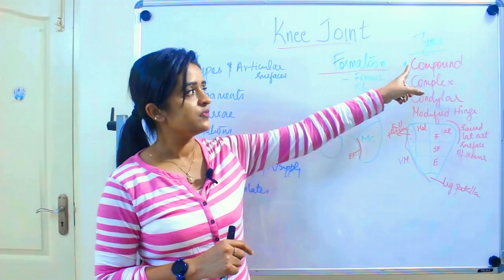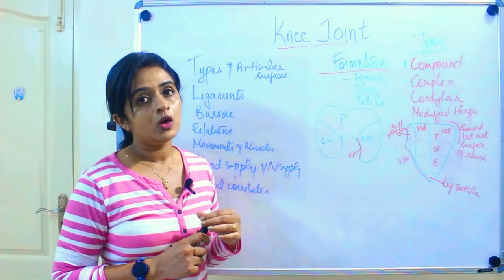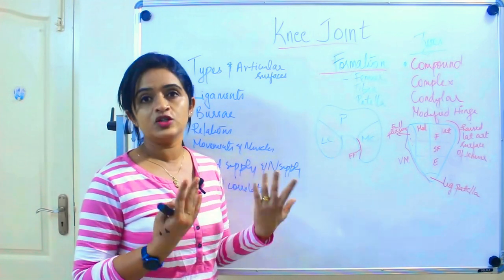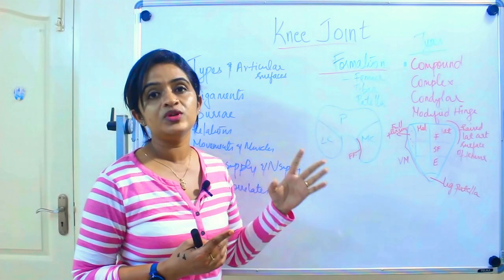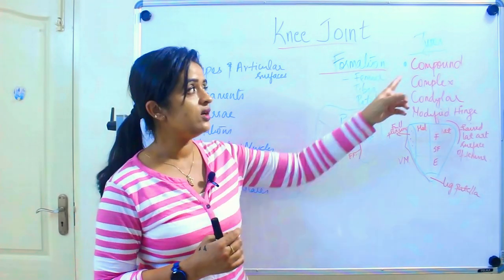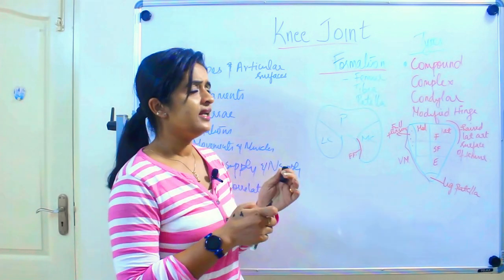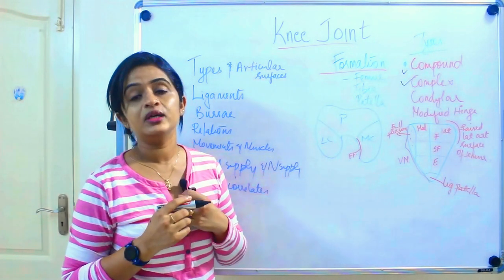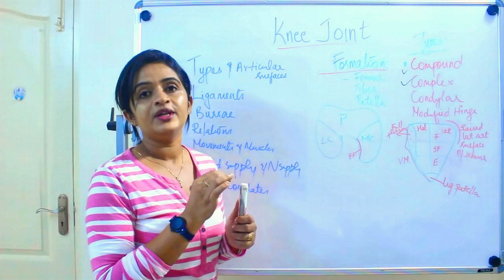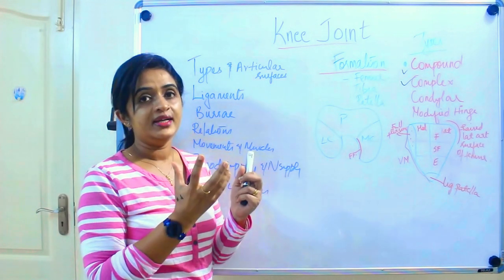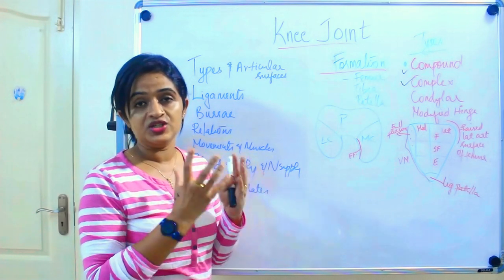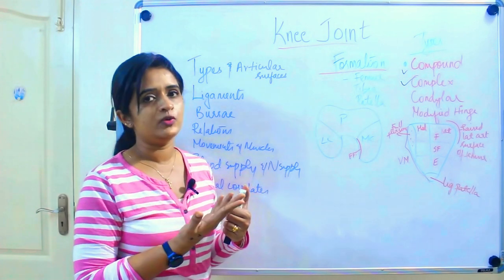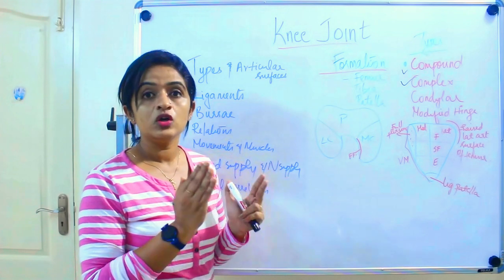First, we call the knee joint a compound joint. A simple joint is formed by two bones; a compound joint involves more than two bones. Since we have three bones in the knee joint, it is a compound joint. We also call it a complex joint — a joint is called complex when the synovial cavity is subdivided by an intra-articular disc, menisci, or fibrocartilage.